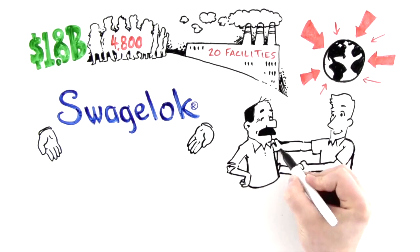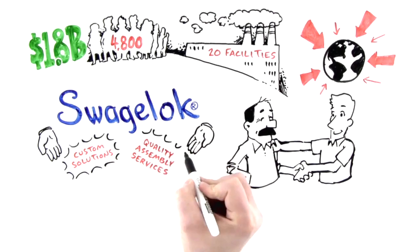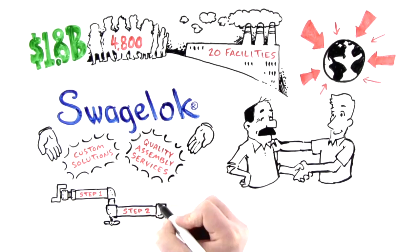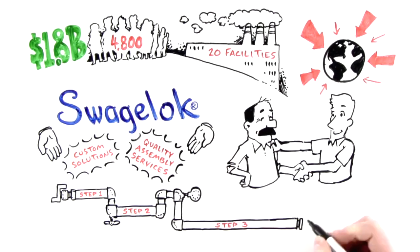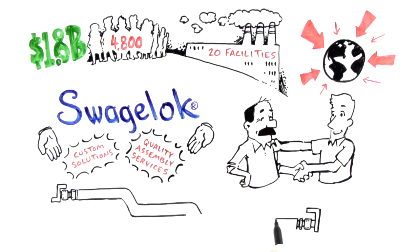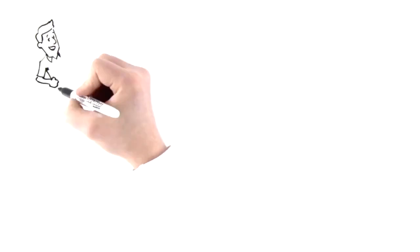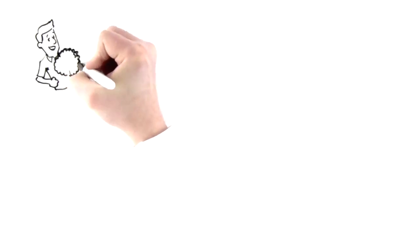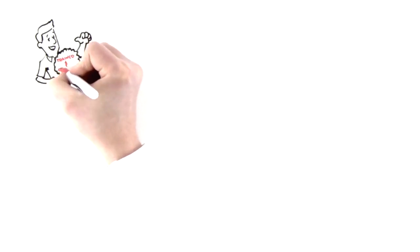By providing William with custom solutions and quality assembly services, Swagelok Northern California helps eliminate unnecessary steps for him and his staff and ensures they receive a total solution every time. From boxes to custom solutions, the Swagelok associates performing the work have all been trained and certified in every aspect of their fluid system components assembly.